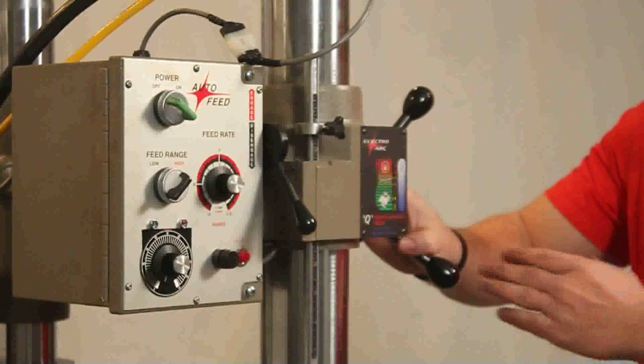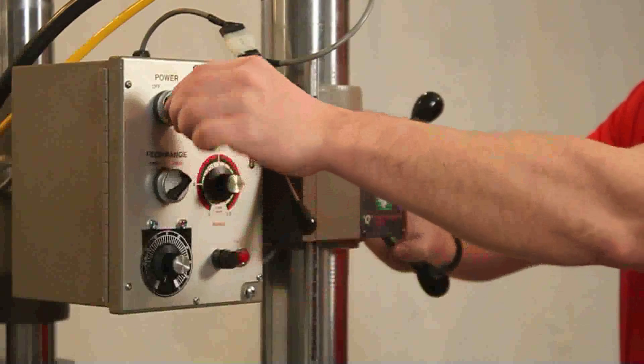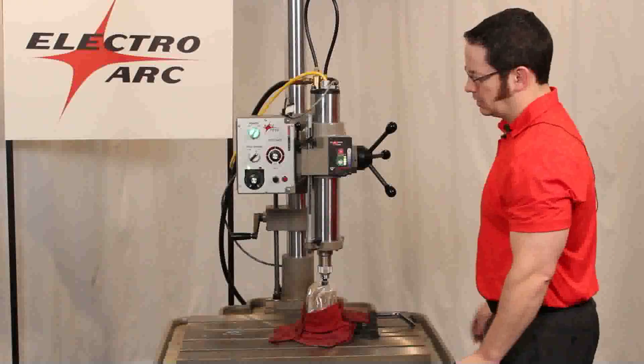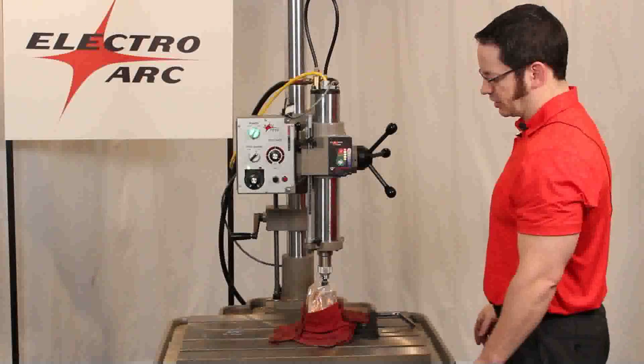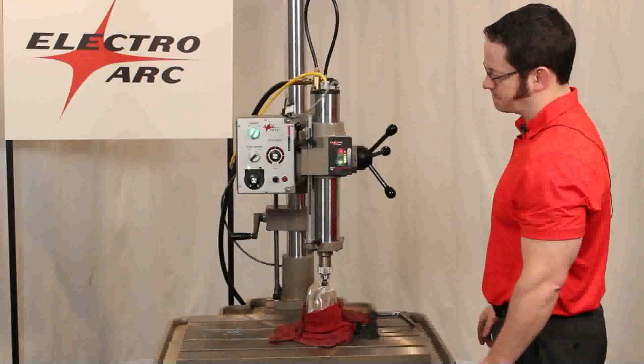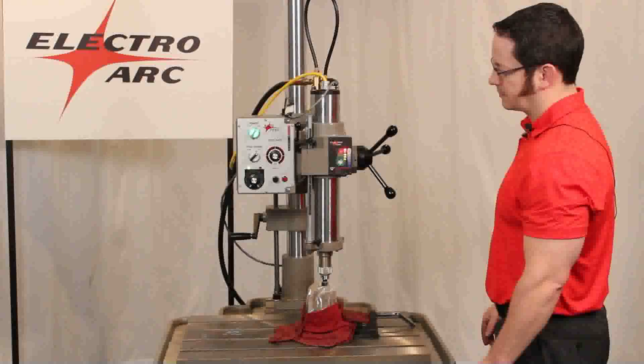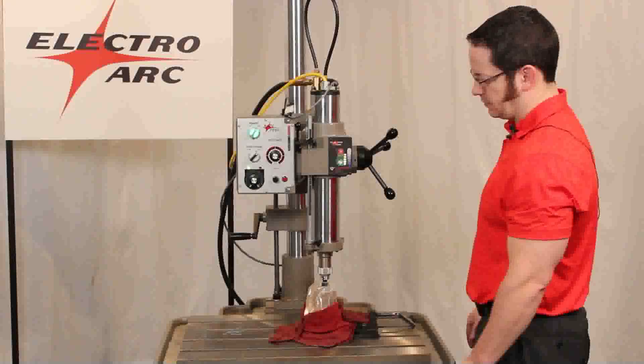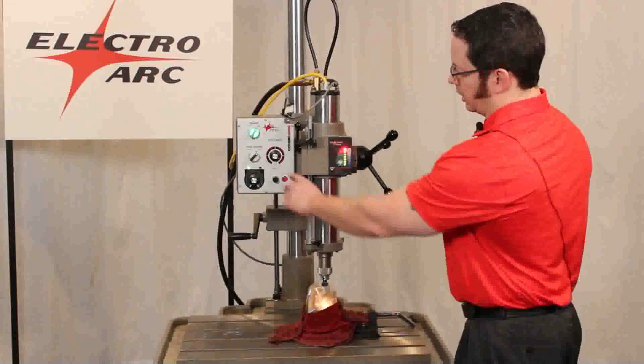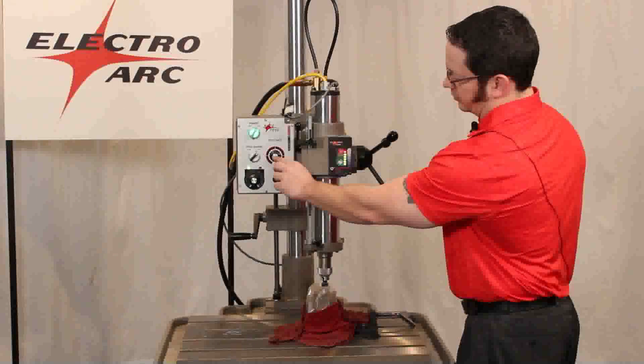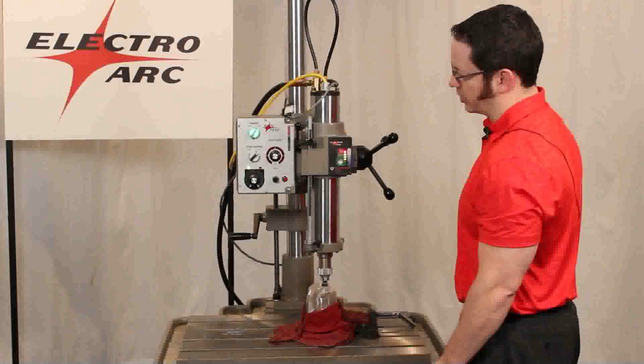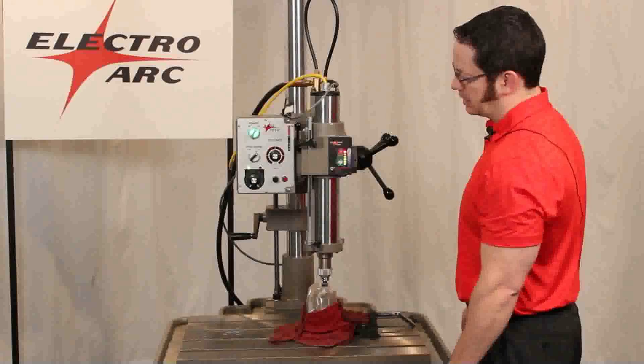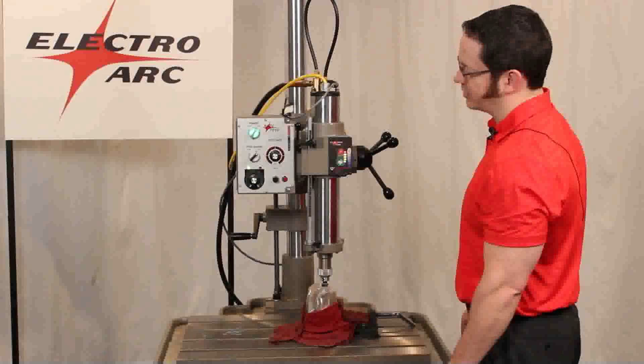As you can see, I'm just feeding manually, but I can simply turn on the auto feed, engage that, and now the machine becomes basically hands-free for your operator. We do have an adjustment here. We do have variable speed ranges for the auto feed. It can go up to about an inch per minute, and as slow as about a tenth of an inch per minute.